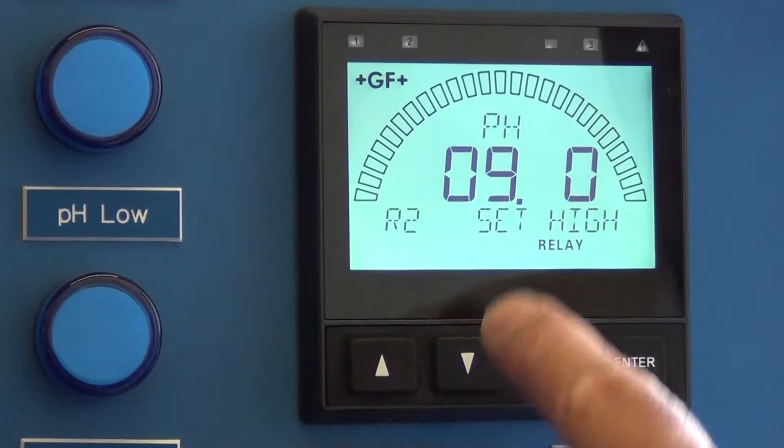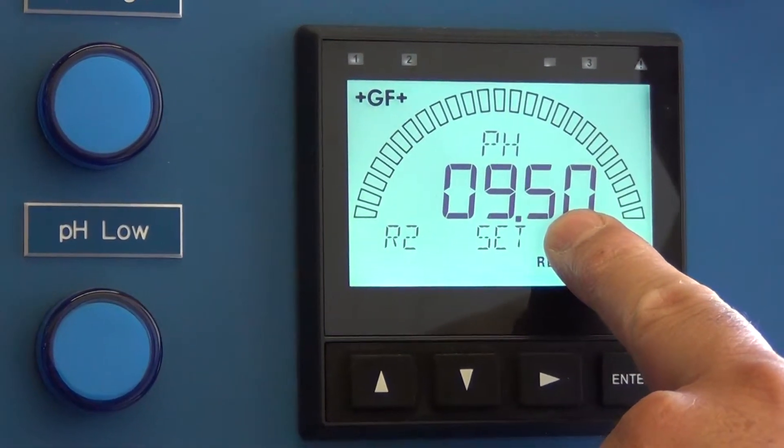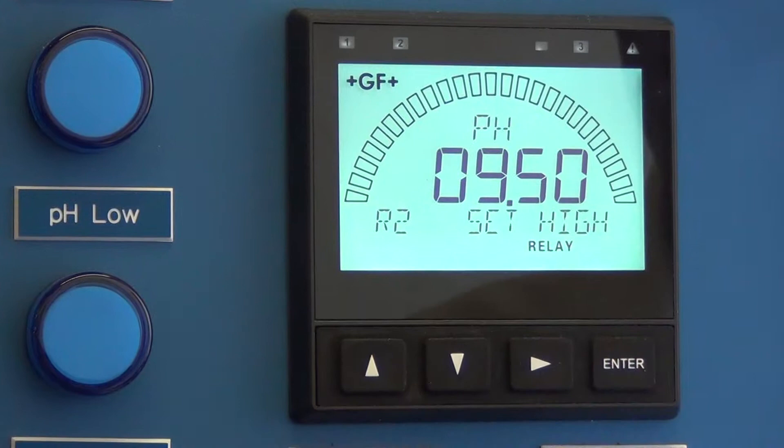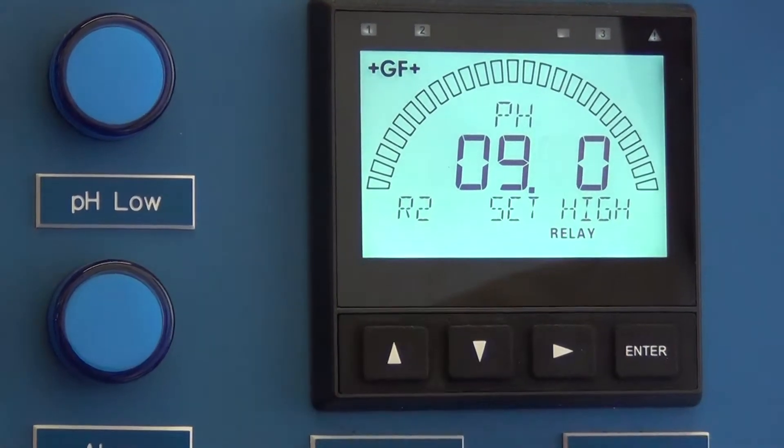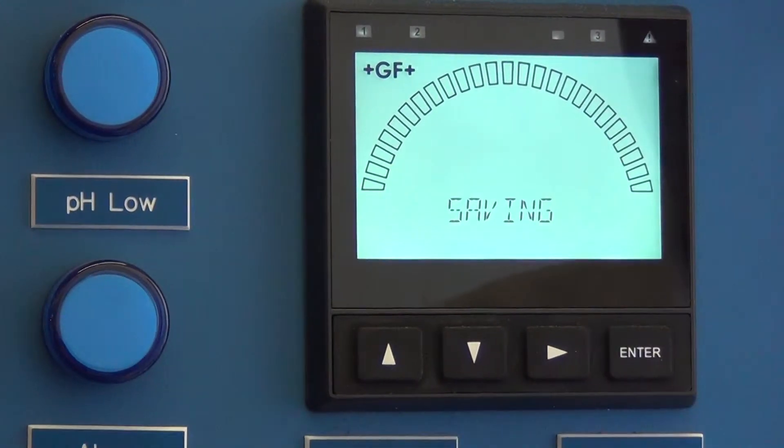You want to change over so that the digit you want to change is flashing, and make your change using the up and down arrows. Once you're done, hit enter.